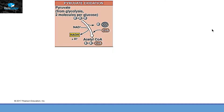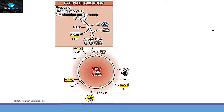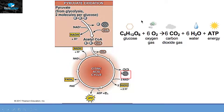This acetyl-CoA with its 2-carbon compound is now ready to enter the Krebs cycle. The other name of the Krebs cycle is the citric acid cycle, where these 2 carbon atoms will get released in the form of carbon dioxide. If we look at the overall reaction of aerobic respiration, from one glucose molecule we can release 6 carbon dioxide molecules. From one glucose, 2 pyruvates will release 2 carbon dioxide, and then 2 acetyl-CoA will release 4 carbon dioxide. So in total, 6 carbon dioxide molecules are released from glucose.